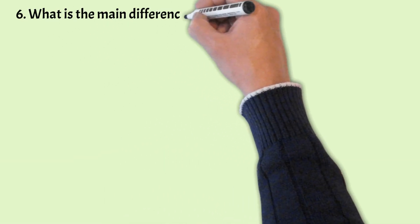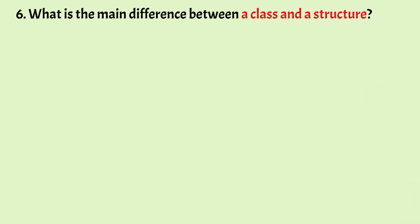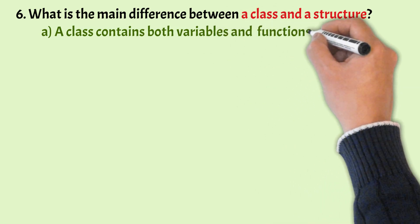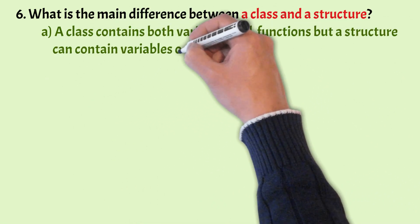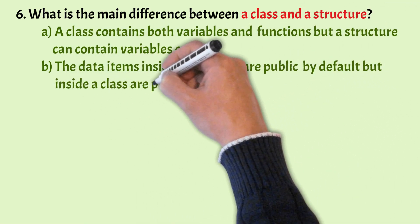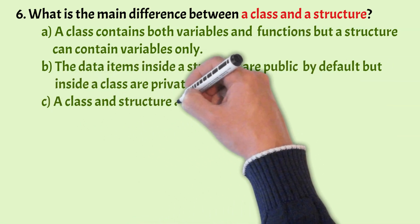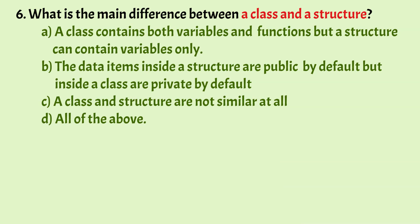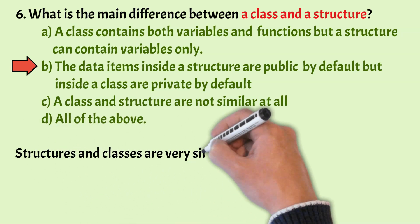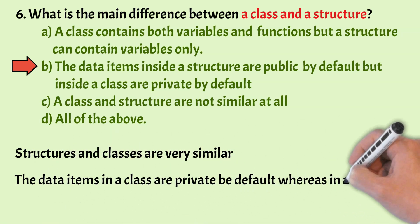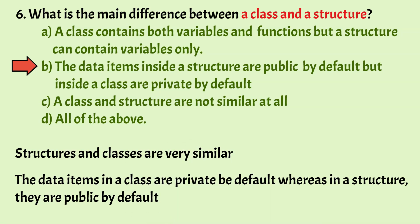What is the main difference between a class and a structure? The correct answer is option B: the data items inside a structure are public by default, but inside a class are private by default. Structures and classes are very similar; the main difference is that data items in a class are private by default, whereas in a structure they are public by default.